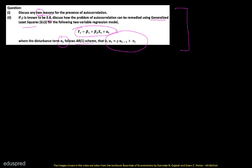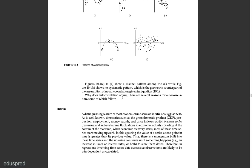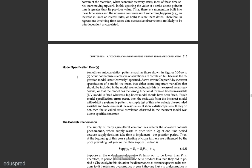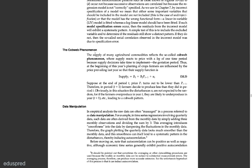The second question has two parts. In the first part, they are asking for two reasons for the presence of autocorrelation. Note that they are only asking for two reasons, so do not write all the reasons in the exam as that will unnecessarily waste your time. In the second part, they are asking that if rho is known to be 0.8, discuss how the problem of autocorrelation can be remedied using generalized least squares for the two-variable regression model where the disturbance term Ut follows an AR(1) scheme.